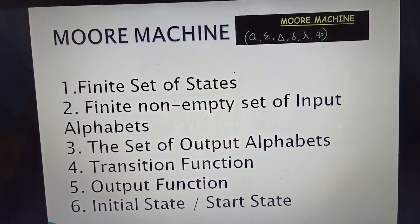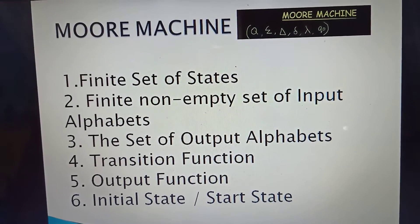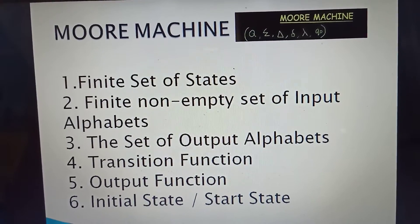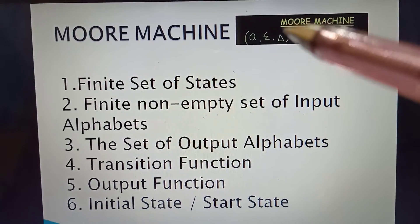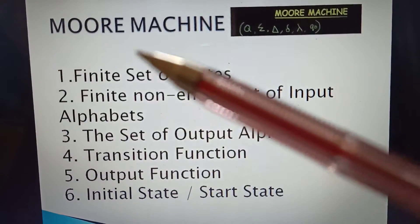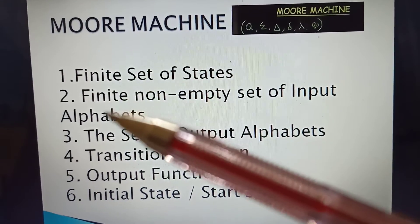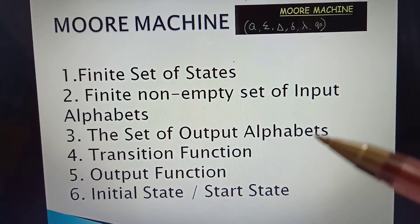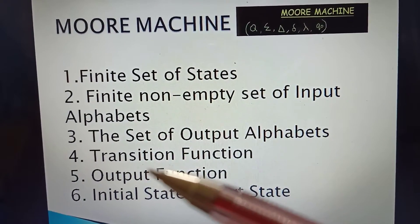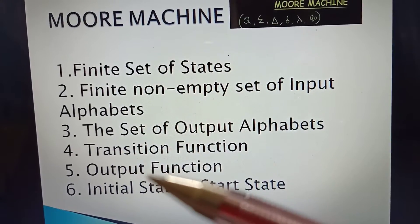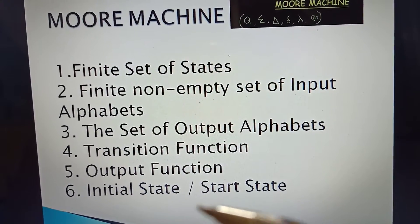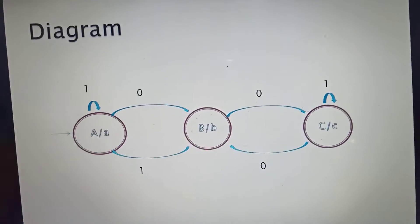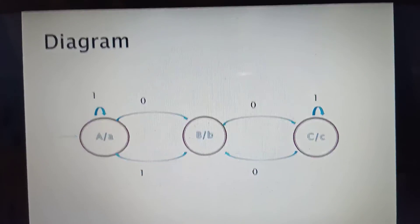For the Moore machine, we also have six tuples: Q, Sigma, Delta, Del, Lambda, and Q-naught. Q is the finite set of states; Sigma is the finite non-empty set of input alphabets; Delta is the set of output alphabets; Del is the transition function; Lambda is the output function; and Q-naught is the initial or start state.